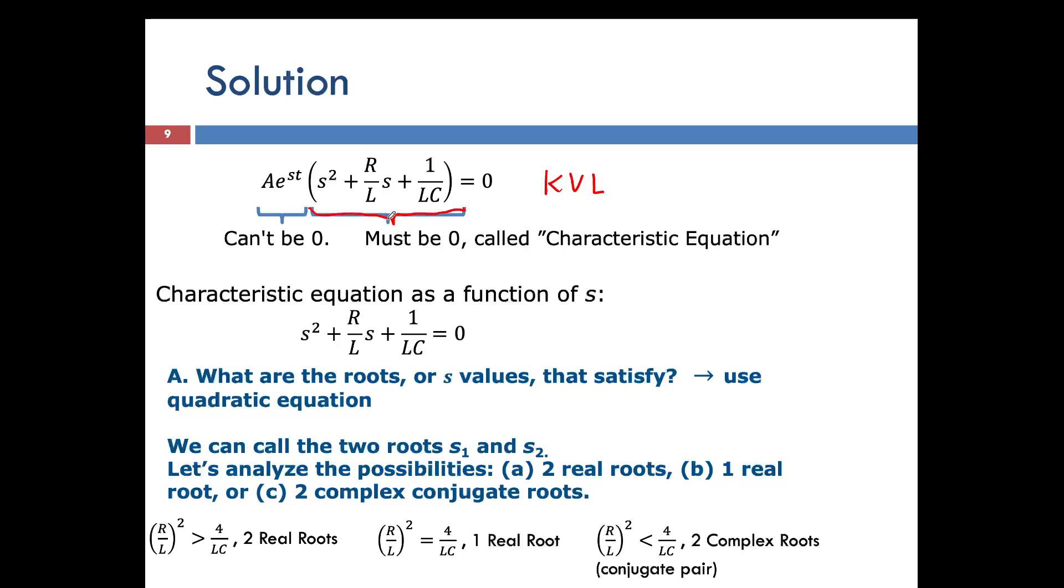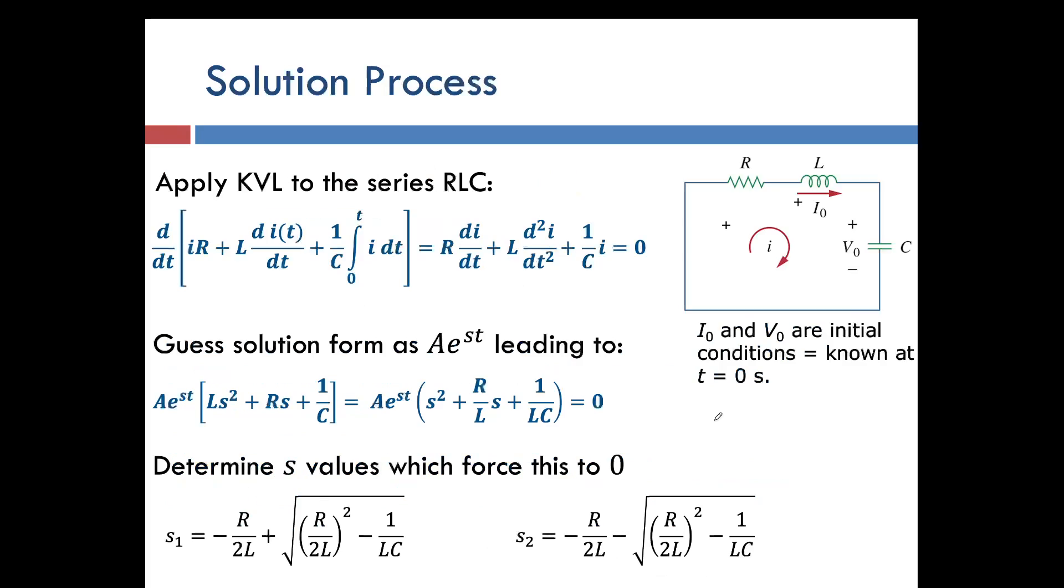So we call this the characteristic equation and we want to know the values of S that came from our guess. We want to know what values of S could force this into zero. So let's use the quadratic formula and find the roots. We'll call those roots S1 and S2. It gives us three cases, right, as you know from your previous courses in math. Two real roots, one real root, or two complex conjugate roots. Those are the three special cases.